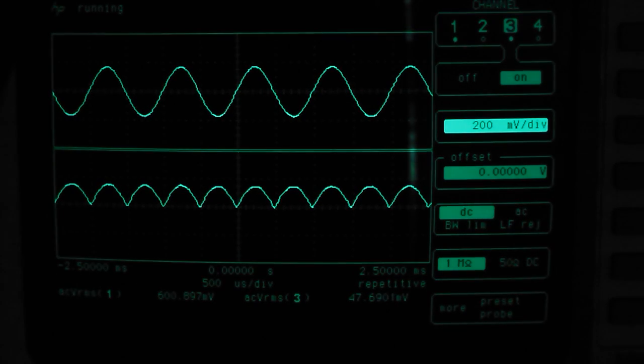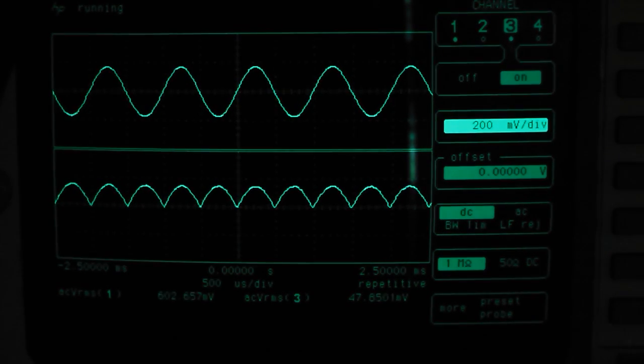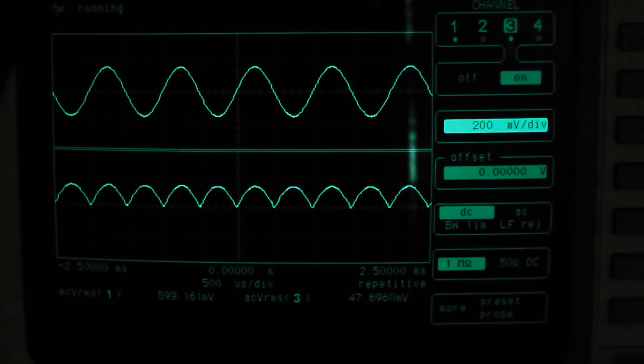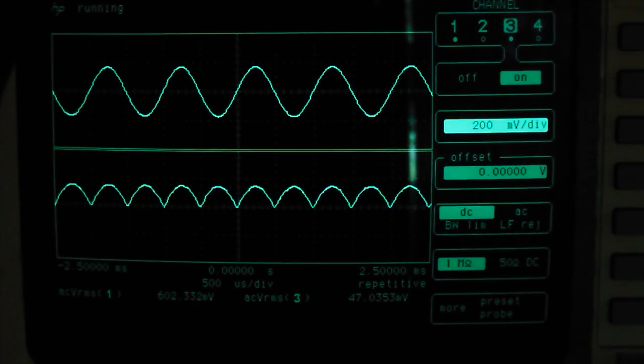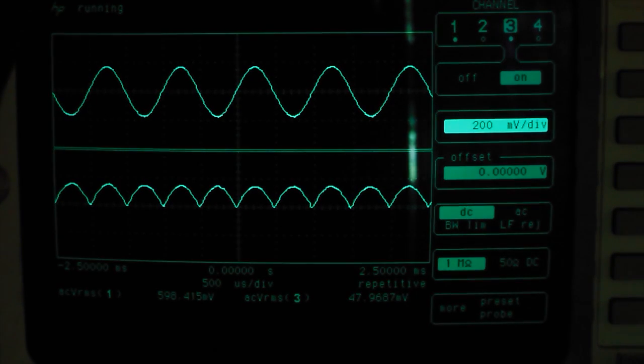Okay, we're just having a look on the scope here. The top trace is showing the signal from our signal generator and the bottom trace is showing this signal which is driving the meter. So as we can see, we've got about 600 millivolts RMS at the input and we've got about 48 millivolts at the output.